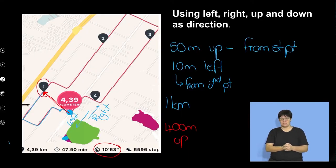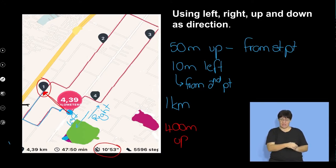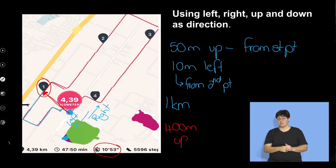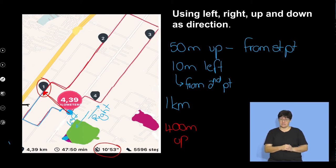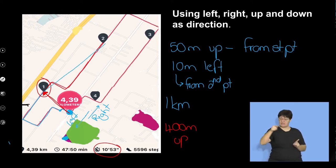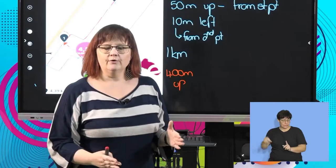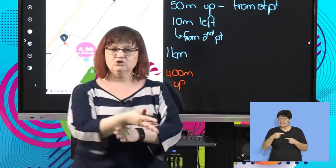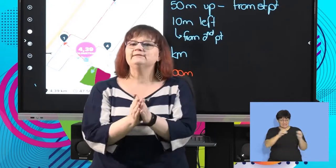We can change the frame of reference. Let's make the one kilometer mark her new frame of reference. From that point, she went to the right, then down, then to the right again — arriving at the two kilometer mark. That's another kilometer of distance traveled, but her displacement from that reference point is close to a kilometer though not quite, because displacement must be a straight line, ignoring all the twists and turns.